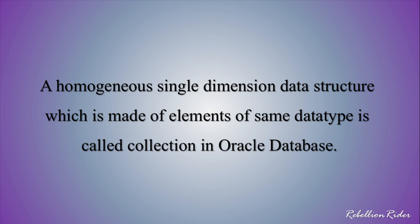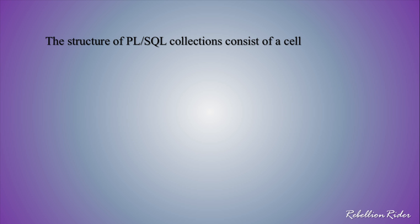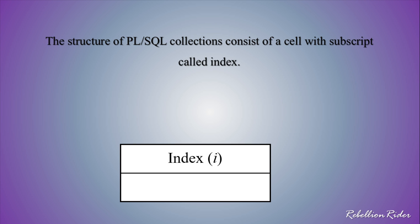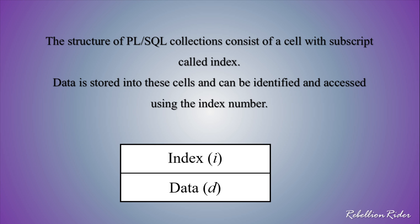As we know, an array consists of data of the same data type, and so does the PLSQL collection, which is why we call them homogeneous data structures. The structure of PLSQL collections consists of cells with a subscript called an index. Data is stored into these cells and can be identified and accessed using the index number. This is again very similar to the structure of an array.